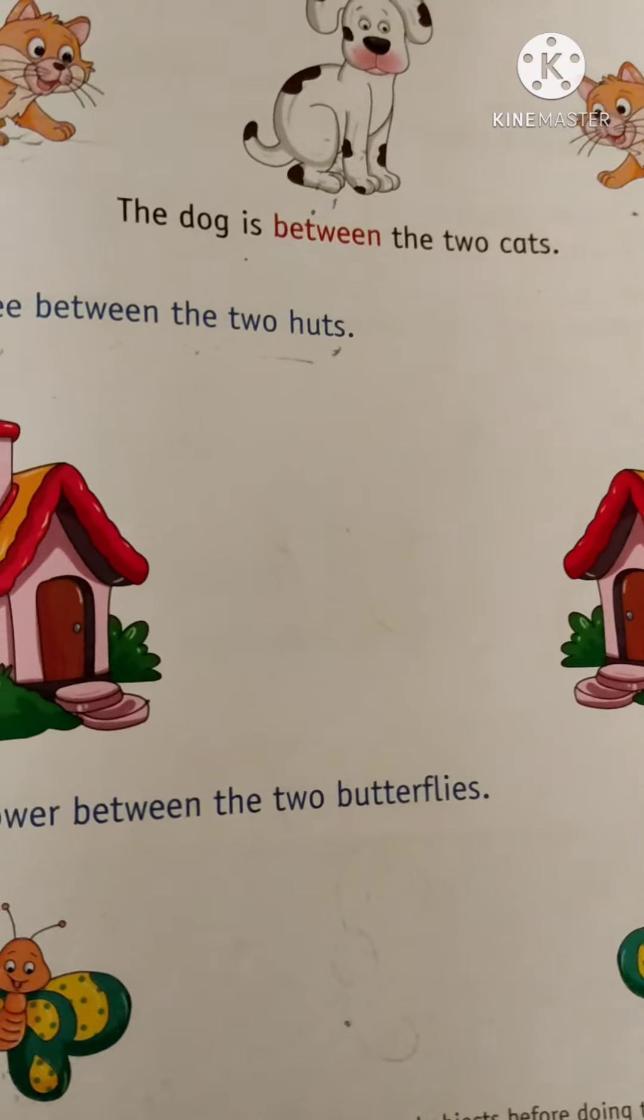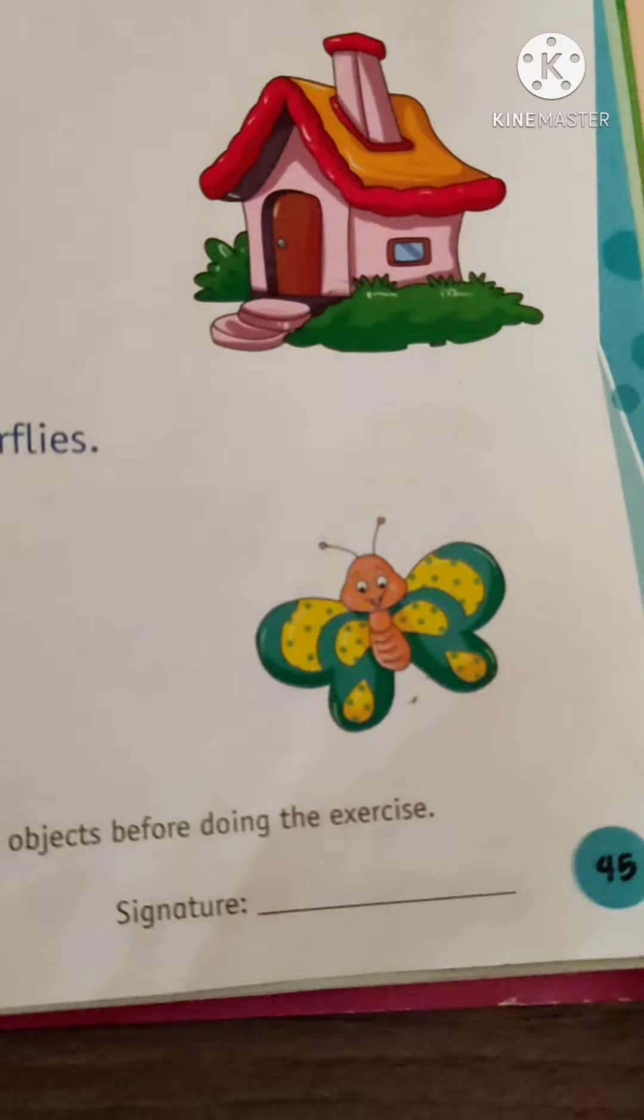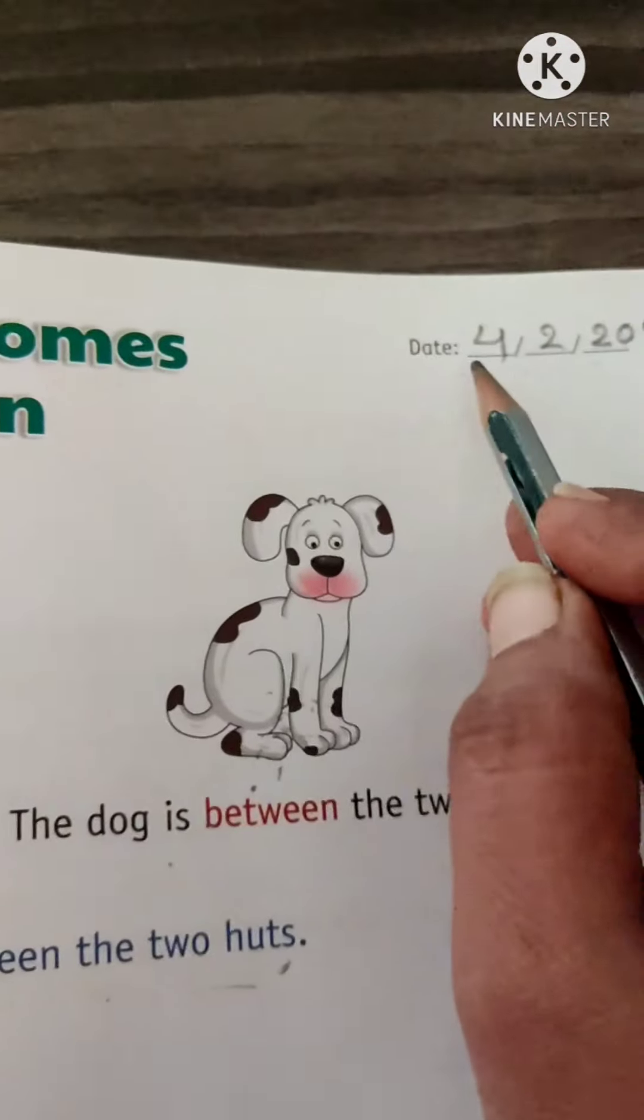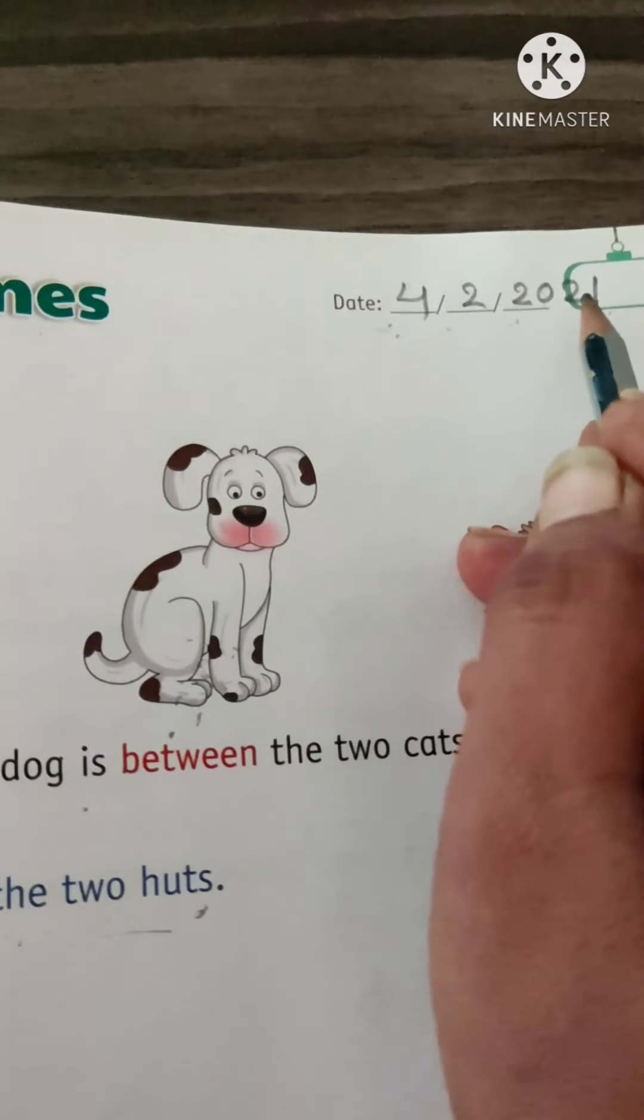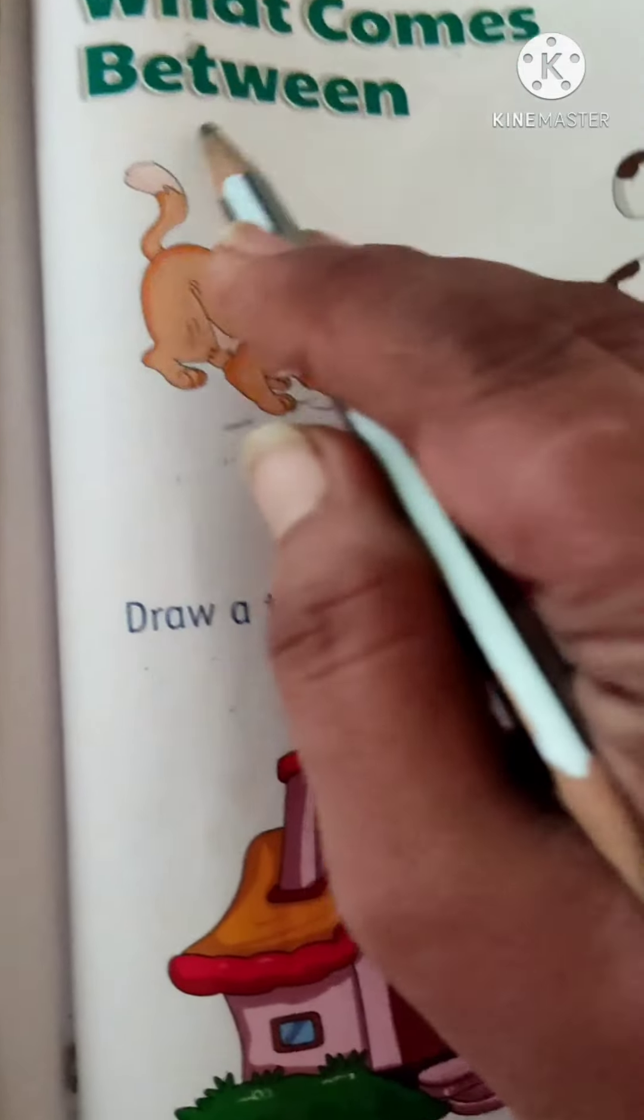Hello kids, Jai Swaminarayan. Good morning. Book number 7, page number 45. Right? Today's date, 4th February 2021. Today's our topic is what comes between. Between means middle.